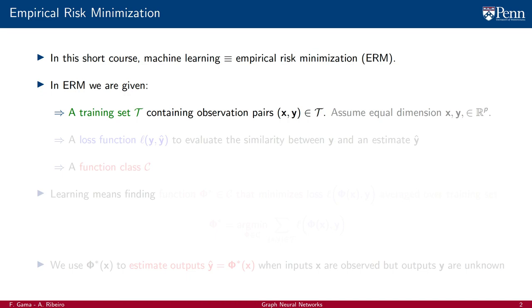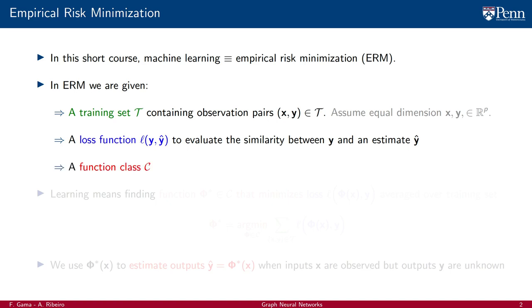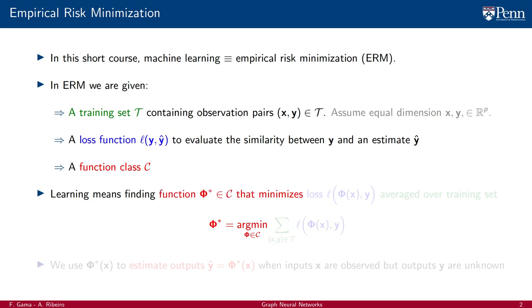In empirical risk minimization, we are given three elements. A training set T containing observation pairs of the form x, y, where x is an input or feature and y is an output associated with x. A loss function L that evaluates the similarity between output y and an estimate y-hat of such output, and a function class C. Learning means finding a function phi-star in the class C that minimizes the loss between the observed output y and the output phi of x predicted by function phi, averaged over the elements of the training set.